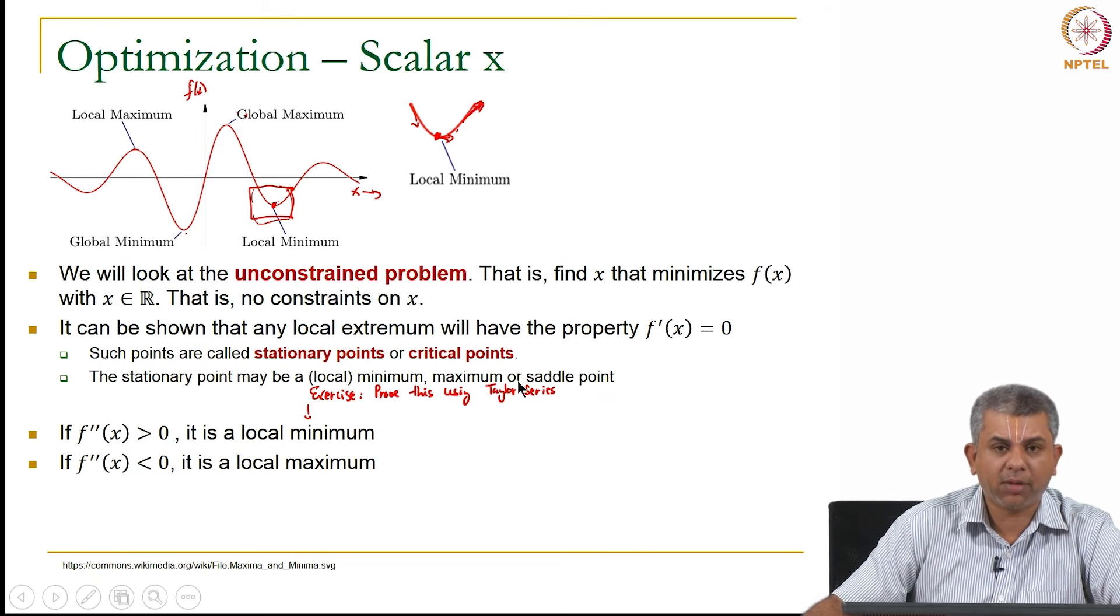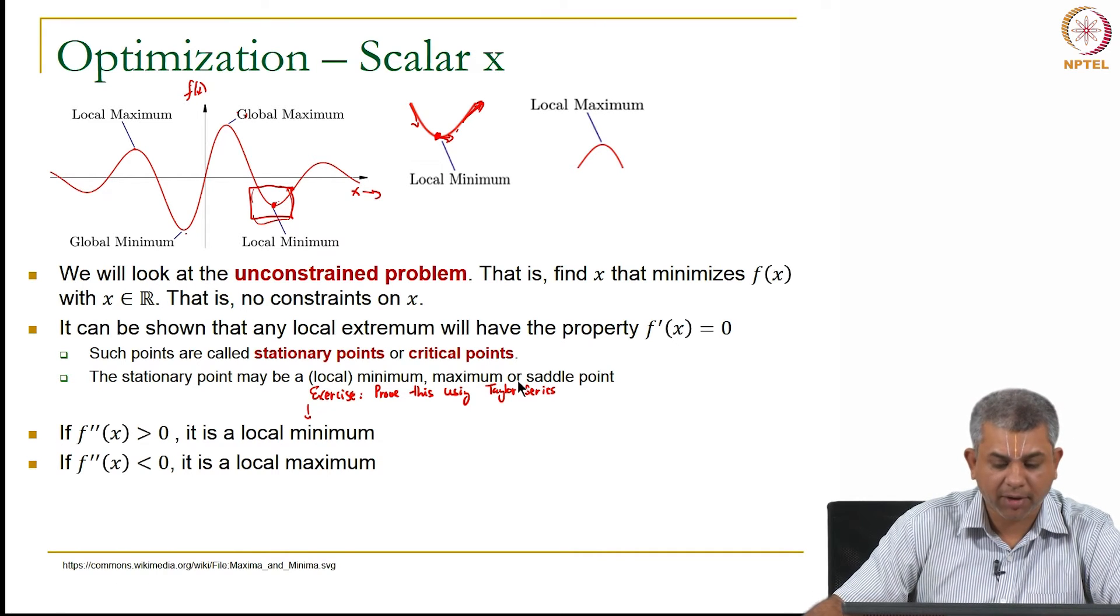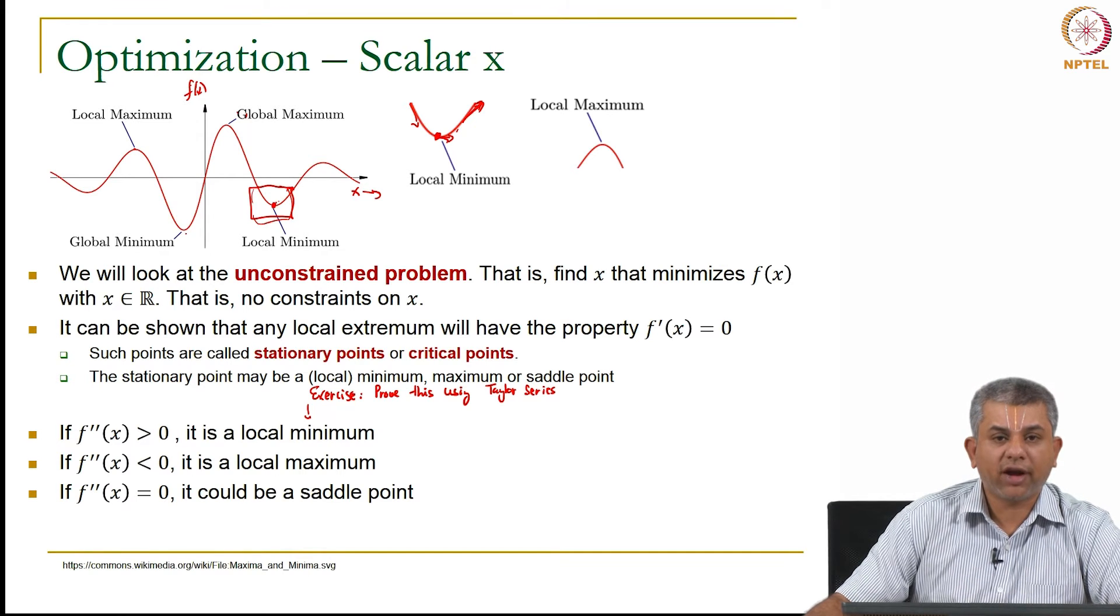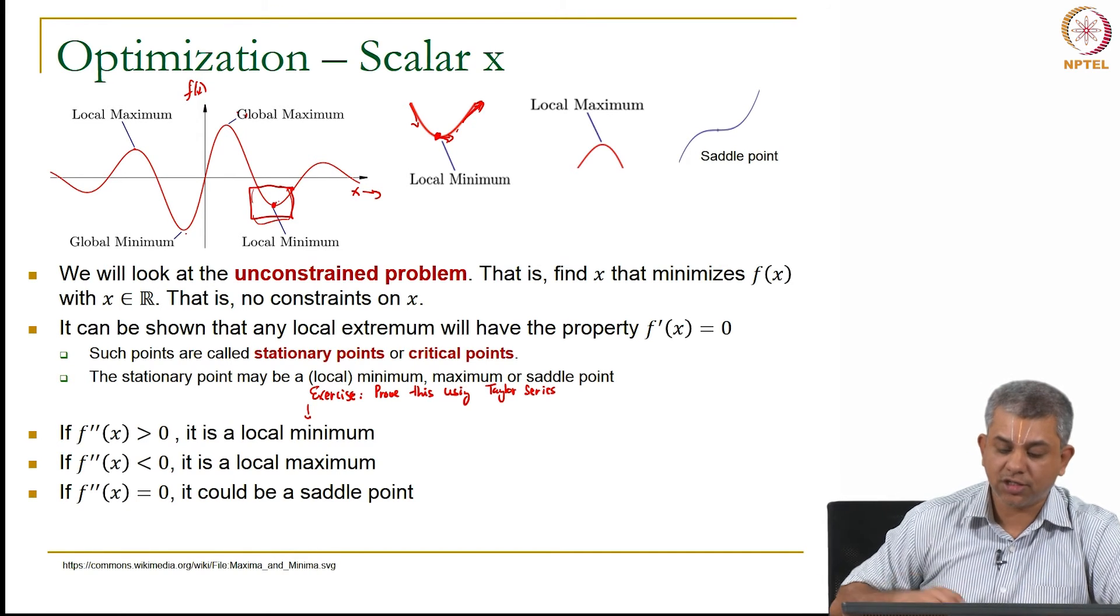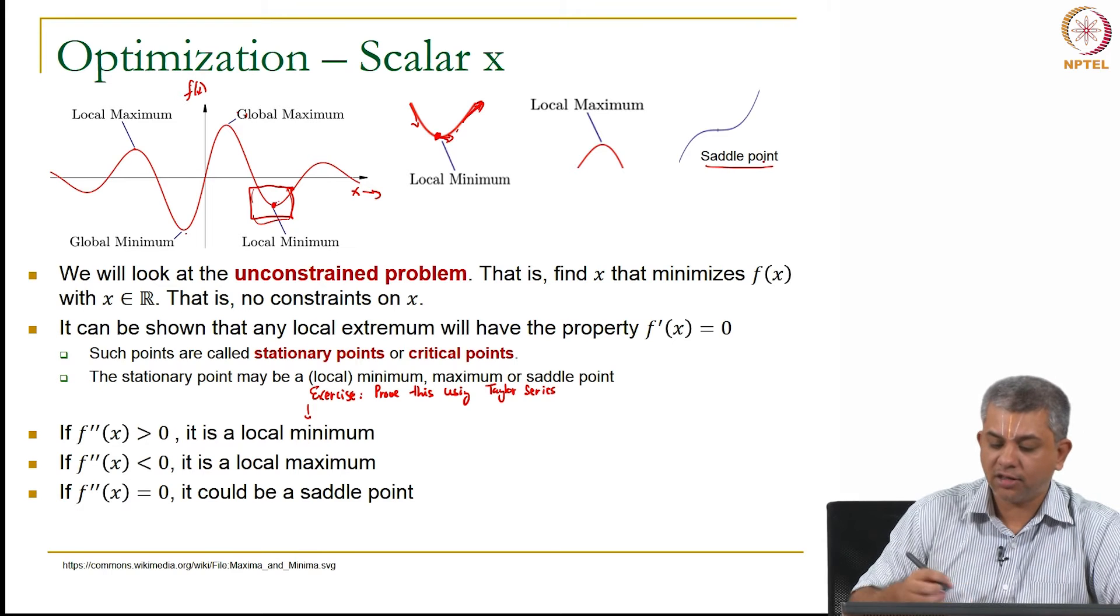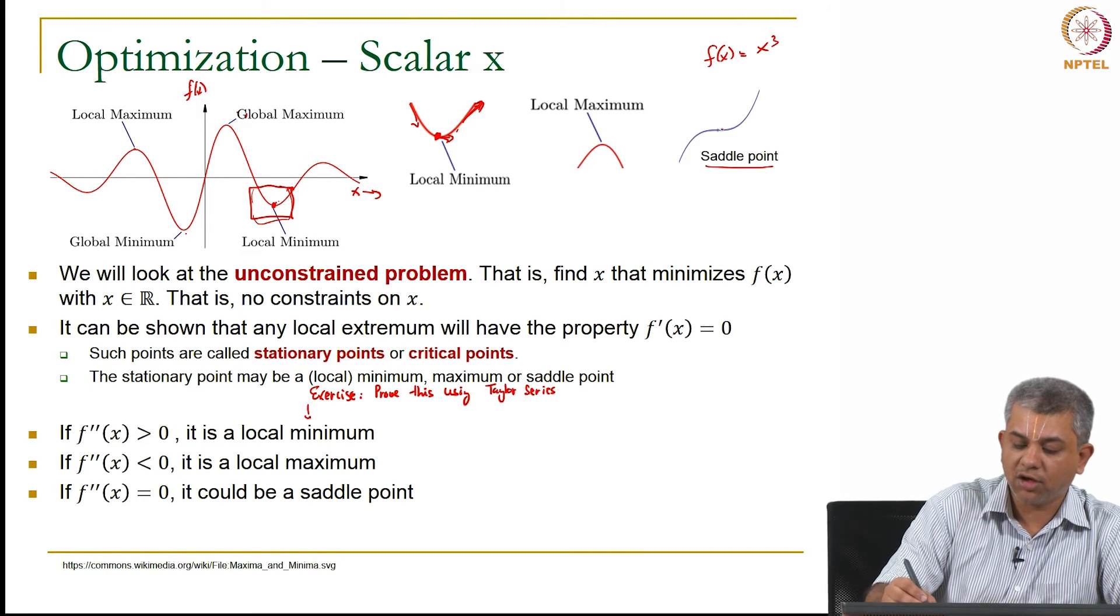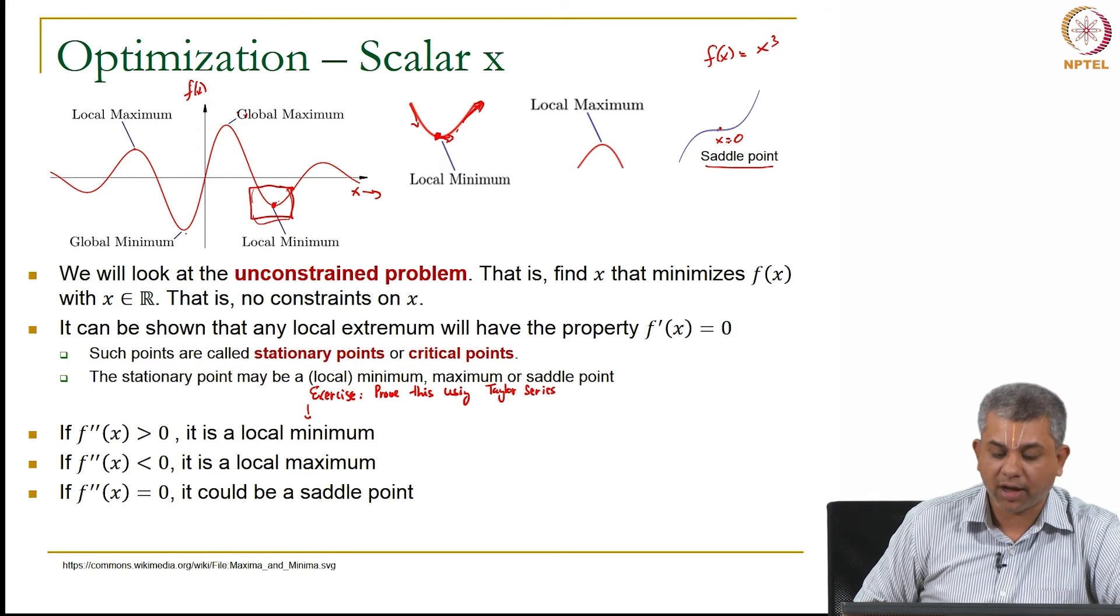Similarly, if f double prime x is less than 0, then it is a local maximum. Once again it has the same idea. Now it can happen that your f double prime x is actually 0. In such a case, it is called a saddle point. This for example is if you look at f of x equal to x cubed around x equal to 0, this is precisely what happens.